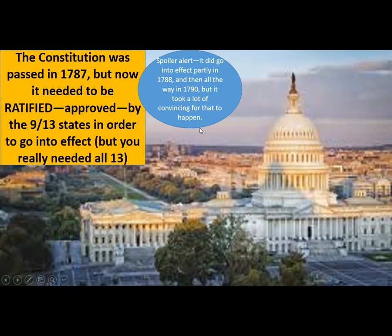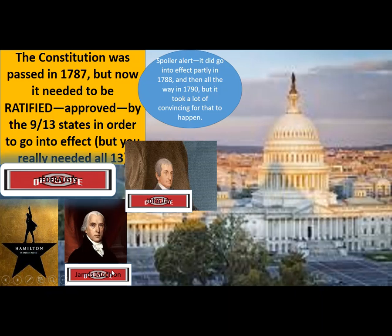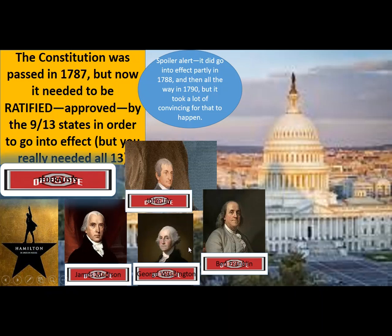It took a lot of convincing for that to happen. You get Federalists — Alexander Hamilton, James Madison, John Jay, George Washington, Ben Franklin. These are Federalists, people who believe in the new U.S. Constitution. They believe that it is an effective means of ensuring a federal form of government, where you have shared power in a national government, but states still have their rights and can govern themselves effectively.